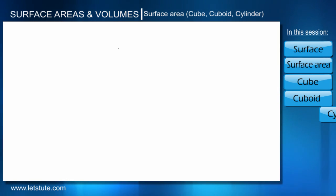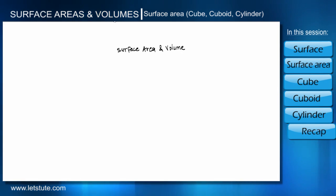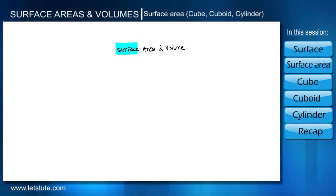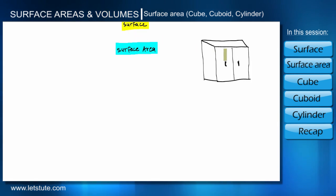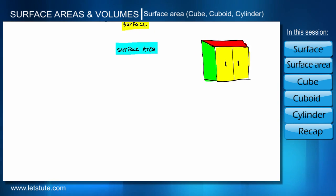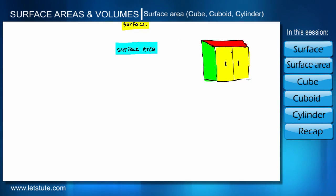Hello everyone, we are going to study about surface area and volume, but in this session we are only going to discuss about surface area. Before going into details, let us see what is a surface. Suppose we have a cupboard and we want to paint it from outside — the total portion we can paint from outside is the surface of this cupboard.